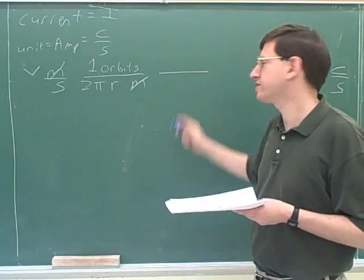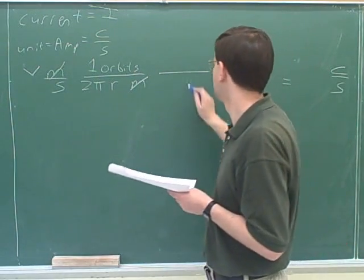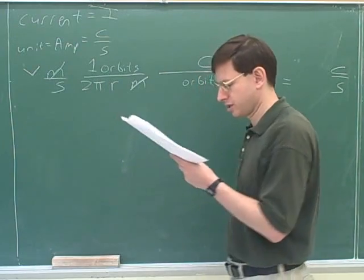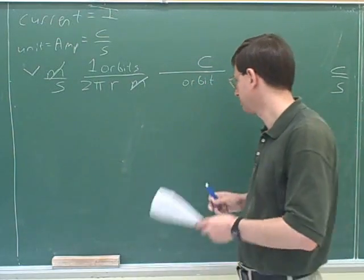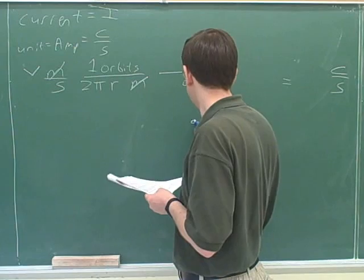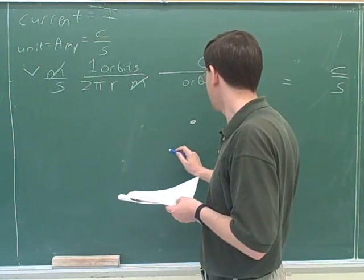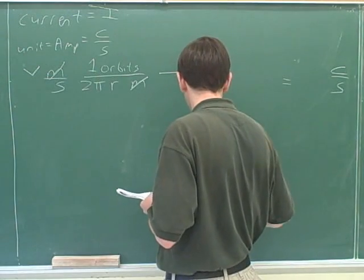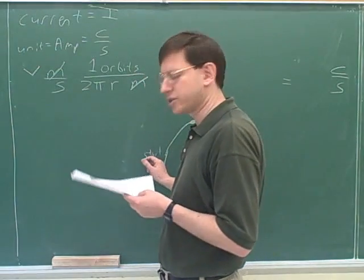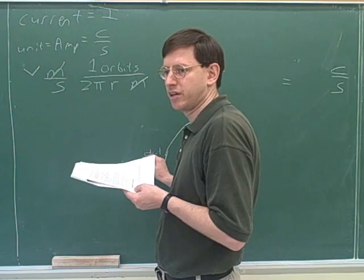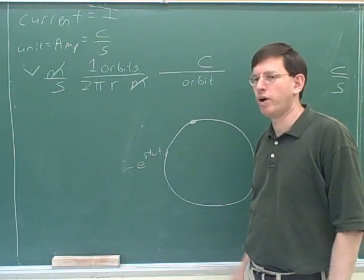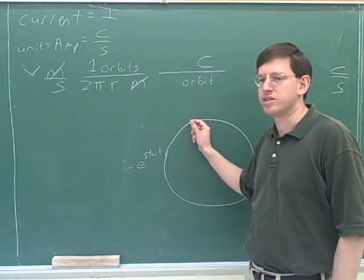But we still don't have coulombs per second. So what's the unit we need to get rid of now? Orbits. And let's replace that with charge. One orbit is... Okay. So let's think about... Let's say that we're focusing on this point here. Let's say the electron starts here. What's the charge on the electron? What symbol are we using for the charge on the electron? E.